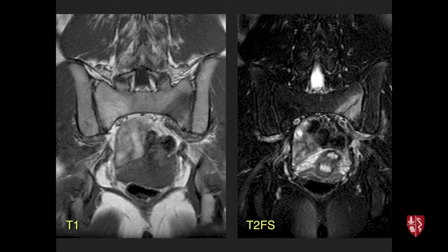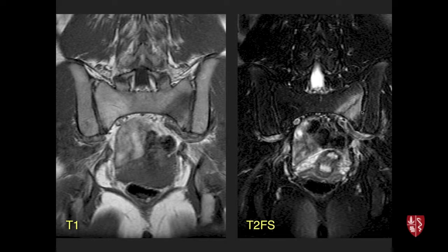On coronal images: T1 shows low signal, T2 fat-suppressed shows bright edema with a dark fracture line. Fracture lines tend to be more visible on T2-weighted scans due to image contrast — a bright edema focus with a low signal line — whereas on T1 there is less contrast between intermediate edema and the low-signal fracture line. Always look carefully on T2 for the fracture line.